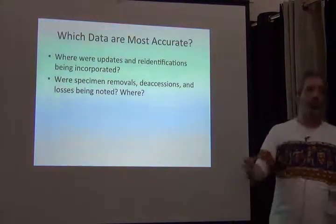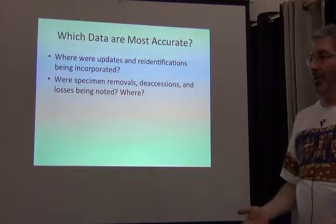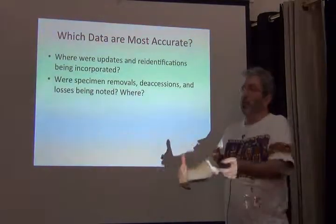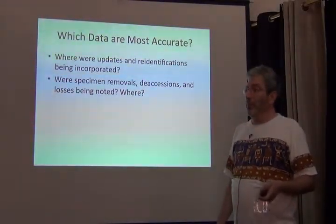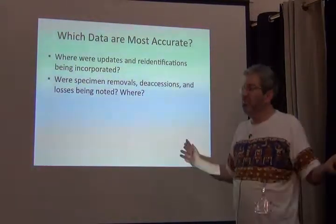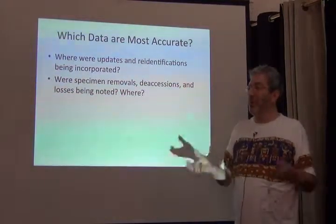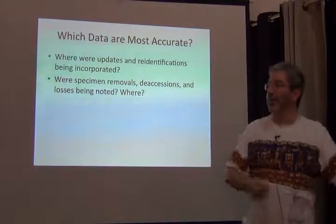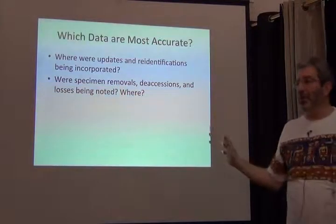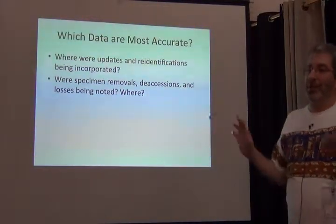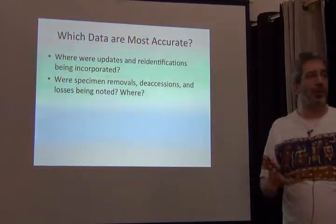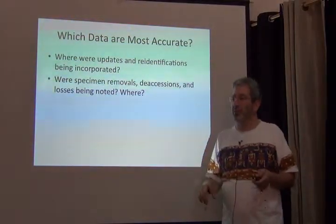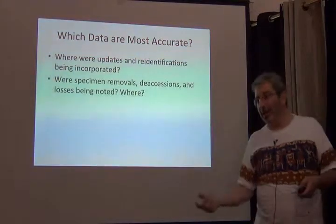Where were specimen removals, deaccessions, losses — where were those noted? In the case of the University of Kansas, they weren't. The newest ones were put in the ledgers, but for the first century of our collection, that information wasn't noted. Luckily, our people didn't do a lot of trading. But if you were in an institution that was trading specimens constantly, sometimes you end up digitizing specimens that you don't even know where they are — they may be lost or at some other institution. We only didn't find maybe 100 or so specimens that should have been there.